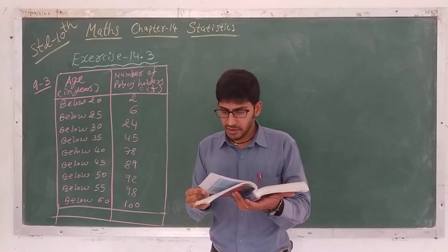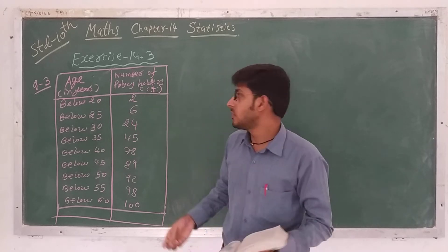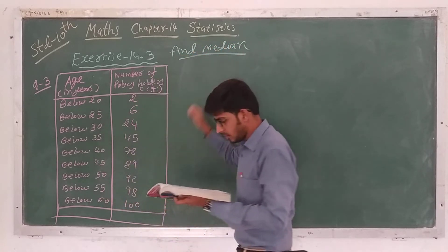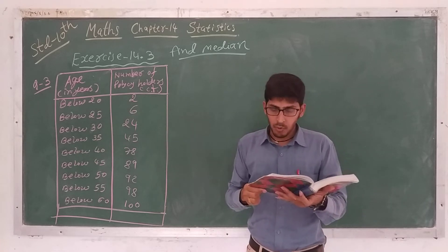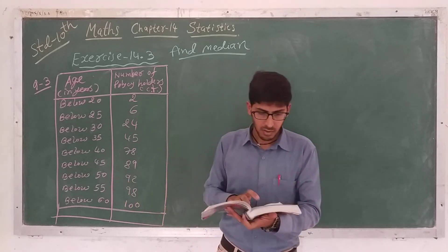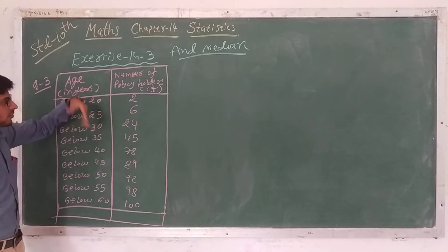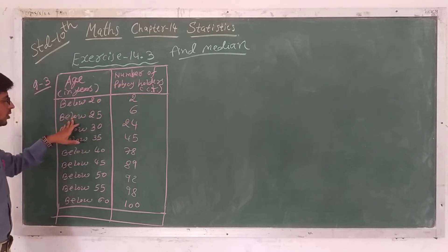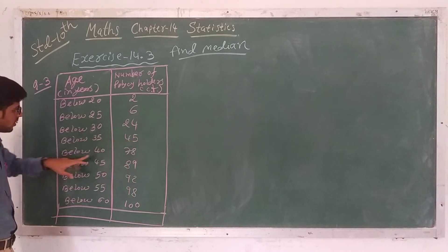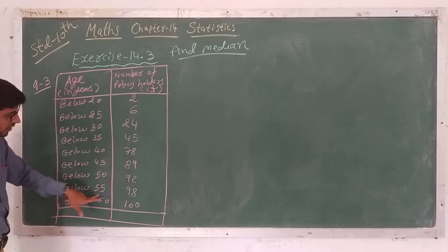A life insurance agent found the following data from the distribution of ages of 100 policy holders. Calculate the median age. We have to find out the median age. Policies are given for persons having age 18 years or less up to 60 years. Age and number of policy holders are given: below 20 there are 2, below 25 there are 6, below 30 there are 24, below 35 there are 45, below 40 there are 78, below 45 there are 89, below 50 there are 92, below 55 there are 98, and below 60 there are 100.